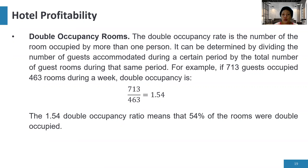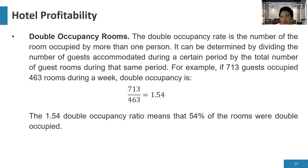Next is double occupancy rate — the number of rooms occupied by more than one person. It is determined by dividing the number of guests accommodated during a period by the total number of guest rooms during that same period. For example, 713 guests occupying 463 rooms gives 713 ÷ 463 = 1.54, meaning 54% of rooms were double occupied.